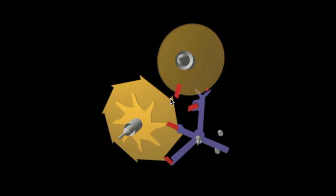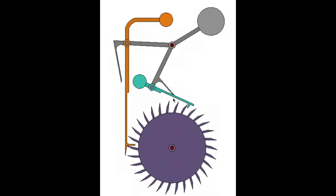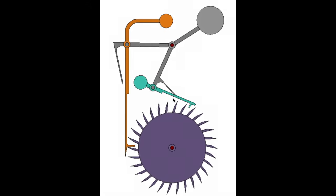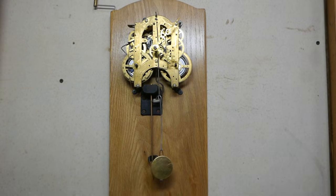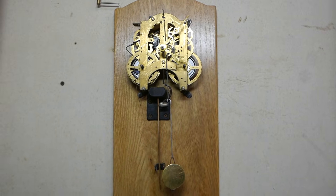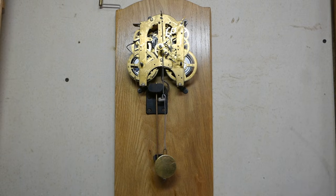Escapements can be found in a variety of different uses but probably the most common use is found in clocks and watches. In larger wall clocks and floor clocks you'll quite often see it matched up with a pendulum. It's the length of the pendulum that actually determines the rate of the movement.